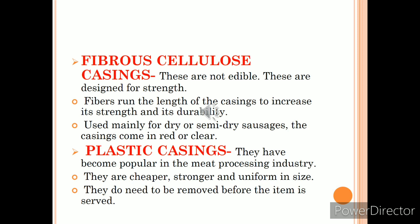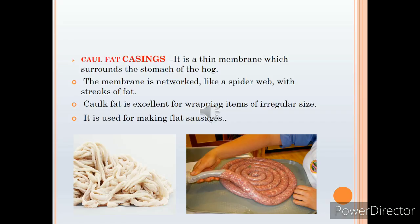Then we have plastic casing, which is popular in the commercial sector because it is cheaper, stronger and uniform in size, and there is no need to remove it — it can be served directly. One more important casing is fat casing, which is actually a thin membrane surrounding the stomach of the hog, networked like a spider web as you can see in the picture. Caul fat is excellent for wrapping items for irregular-sized sausages, and this type of casing is generally used for making flat sausages.